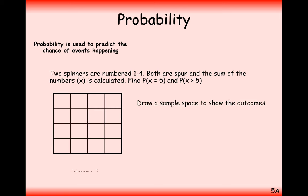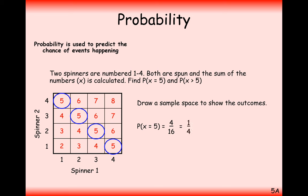And one way of doing this would be to draw a sample space out and write down all the different ways that we can get 5. So 4 add 1 and 1 add 4, 2 and 3 and 3 and 2. So that's 4 different ways out of 16 possible combinations. So that's going to be 1 out of 4.